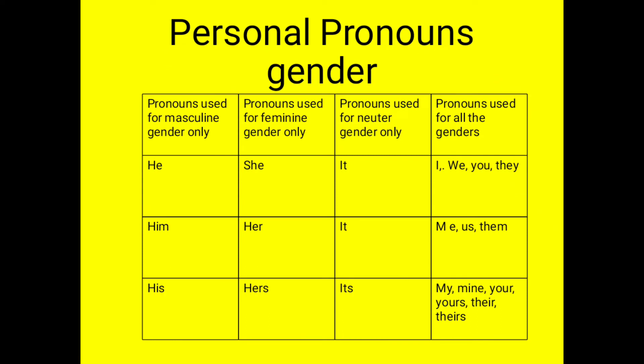Now let us learn about personal pronouns and gender. Pronouns that are used for masculine gender only are he, him and his. Pronouns used for feminine gender only are she, her and hers. Pronouns that are used for neuter gender only are it and its.